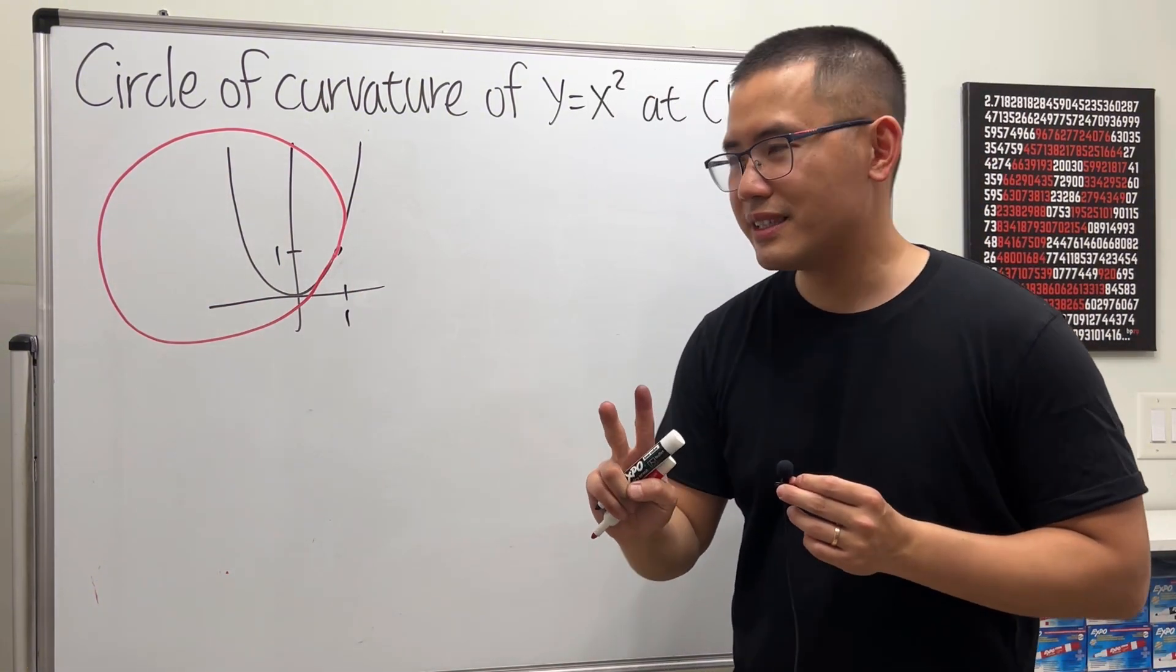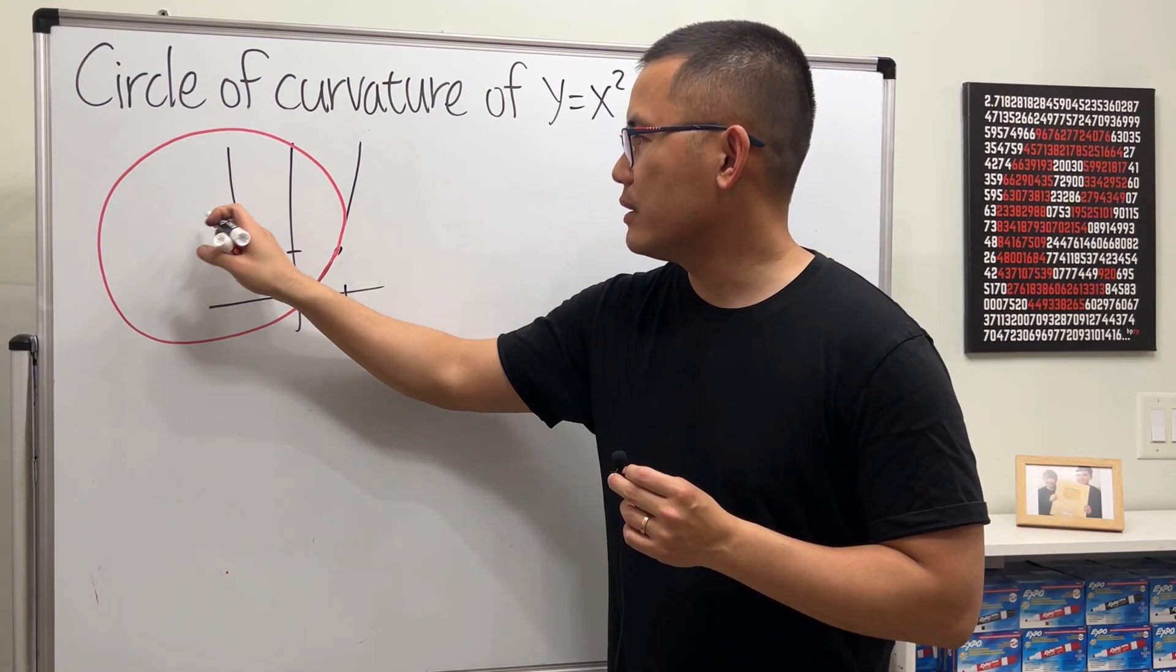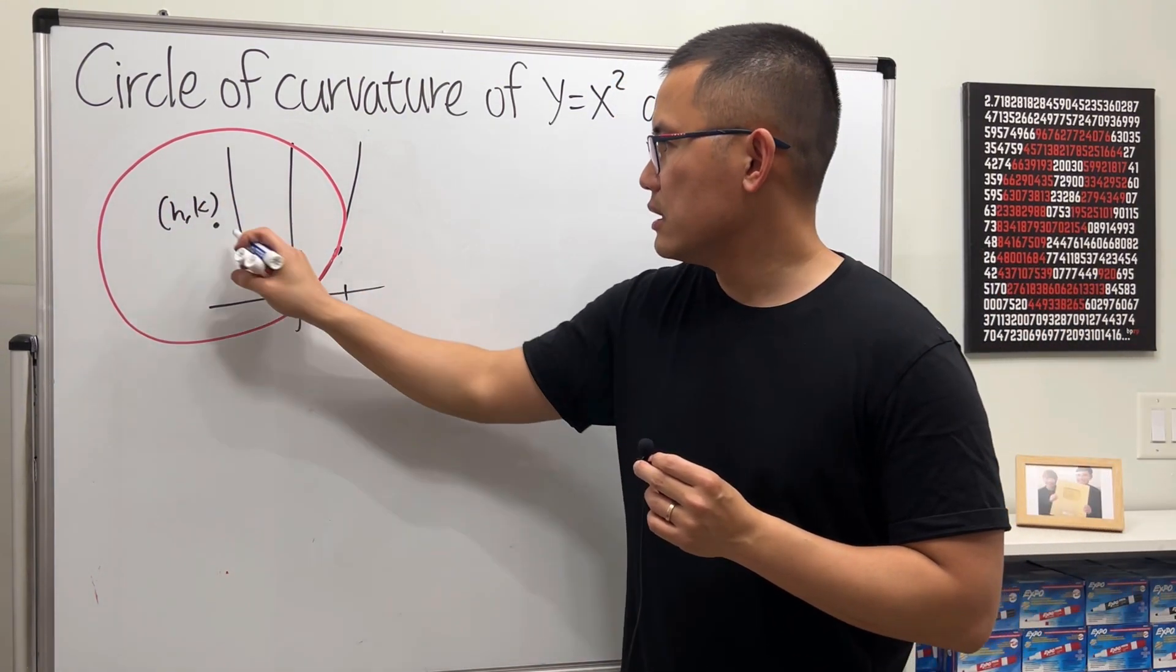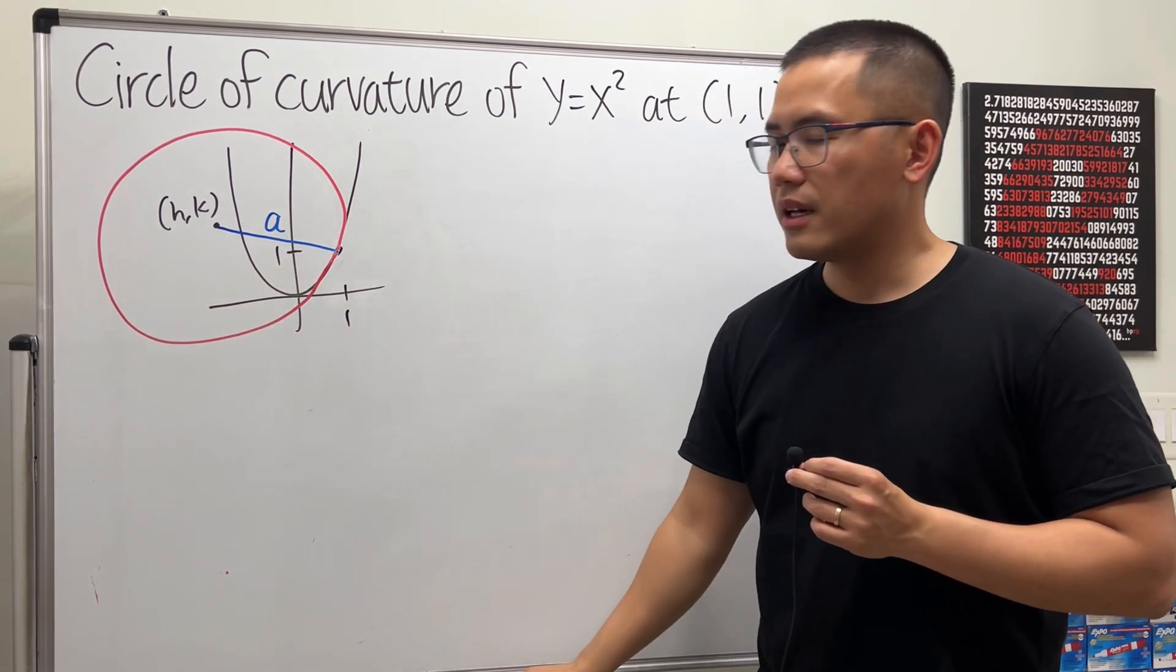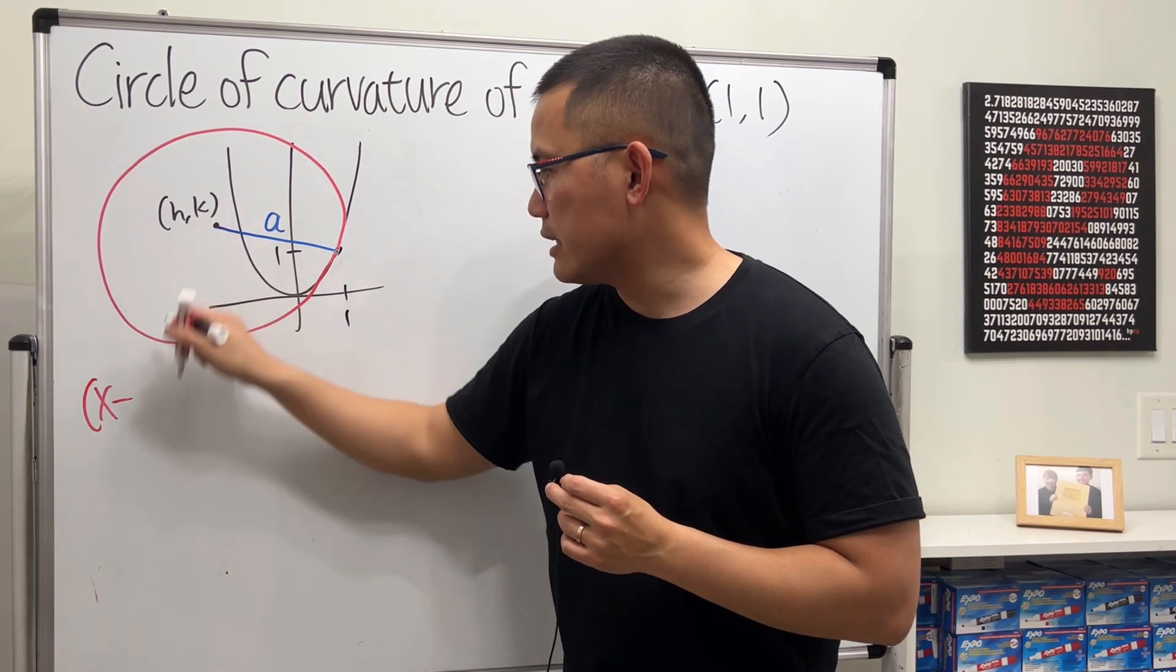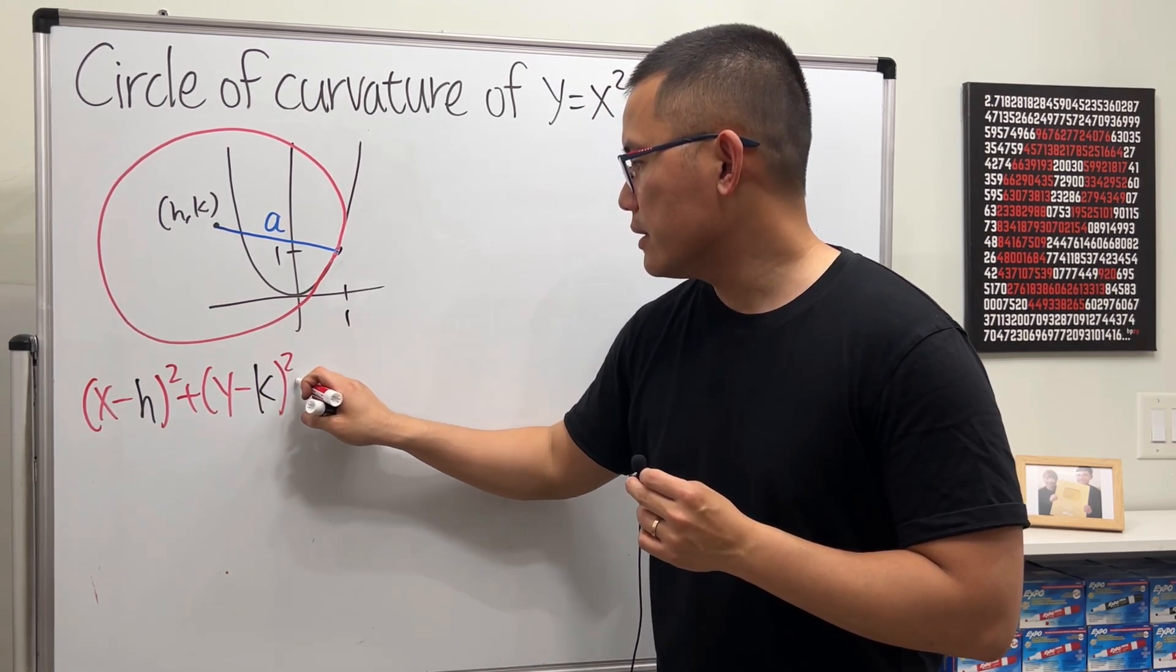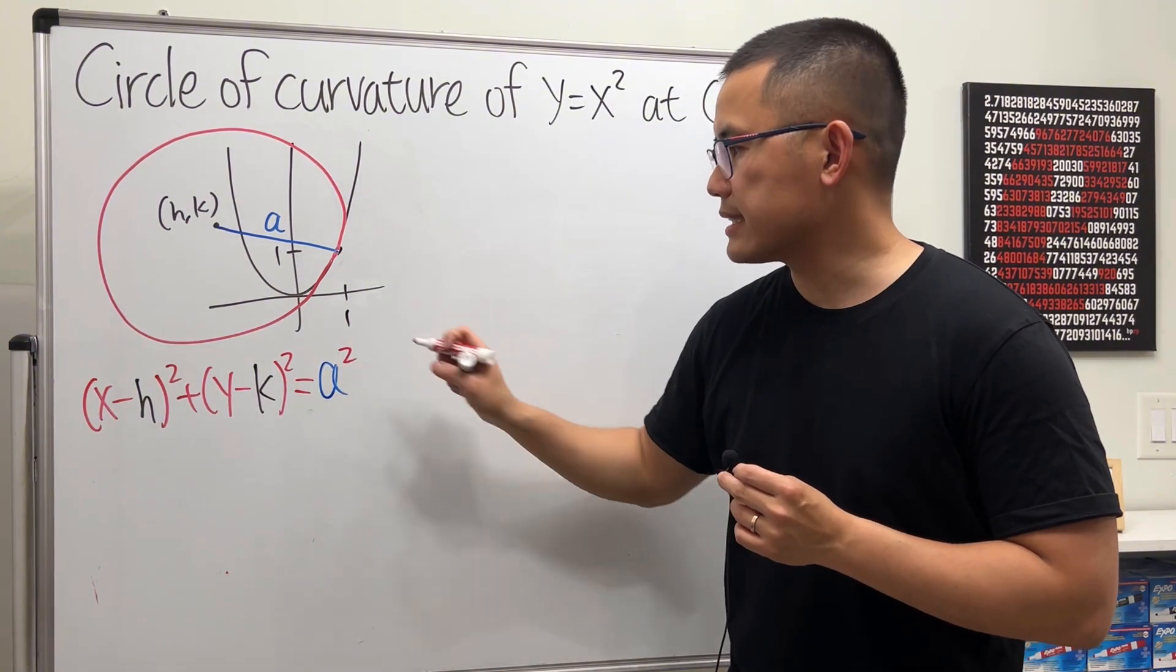Our goal is to find the equation of this circle. So we need two things: the center and the radius. The center is somewhere here, but I don't know what it is yet. I will call that (h,k). And the radius is from here to here. I'm going to call that a. In general, the equation of the circle is (x-h)² + (y-k)² equals the radius, which is a, and then we square that.